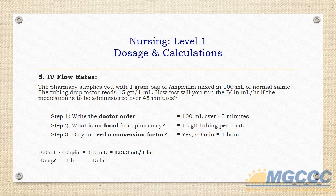Set up the problem: 100 milliliters divided by 45 minutes, multiplied by 60 minutes divided by 1 hour. Minutes cancels, leaving milliliters per hour. Multiply the numerators: 100 times 60 equals 600 milliliters. Multiply the denominators: 45 times 1 equals 45 hours. Divide: 600 divided by 45 equals 133.3 milliliters per hour. Per rounding rules, when a value is greater than 1 milliliter, round to the tenths place — giving 133.3 milliliters per hour.